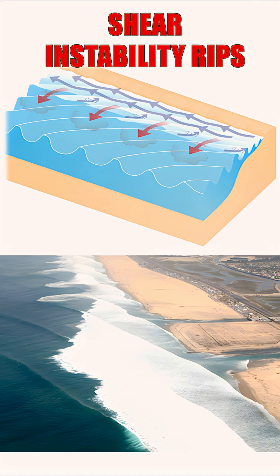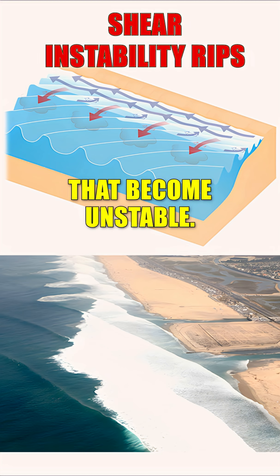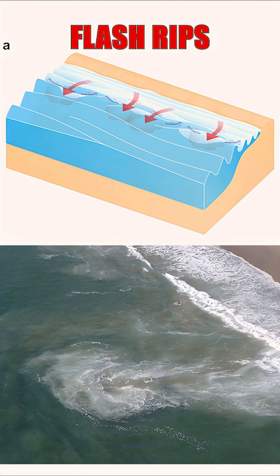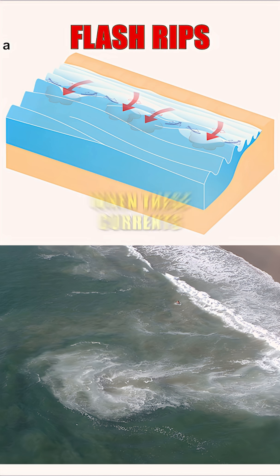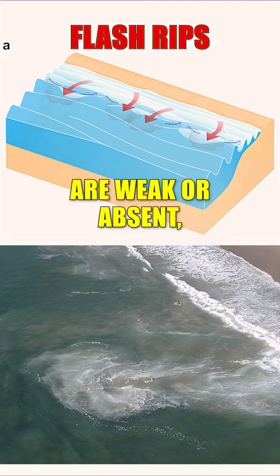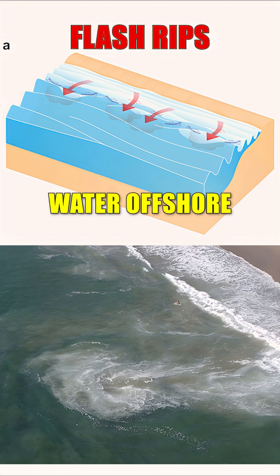Sheer instability rips are triggered by strong longshore currents that become unstable. Flash rips, on the other hand, appear suddenly when these currents are weak or absent, forming eddies that pulse water offshore.